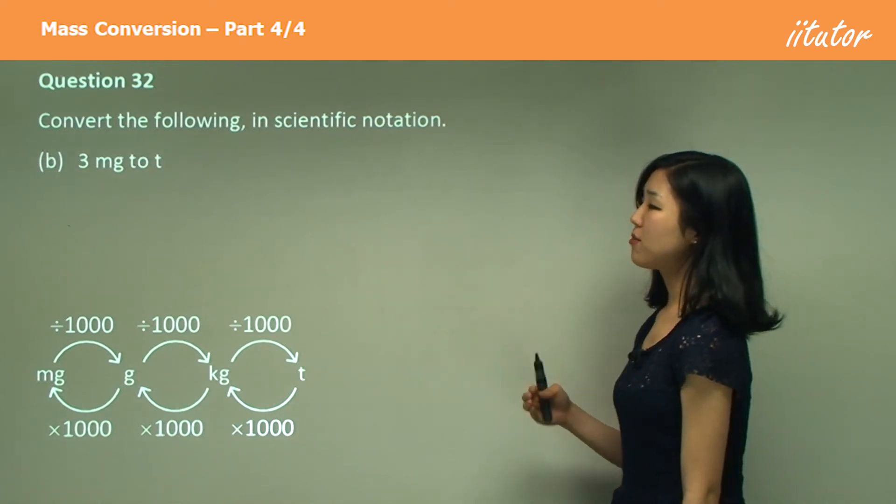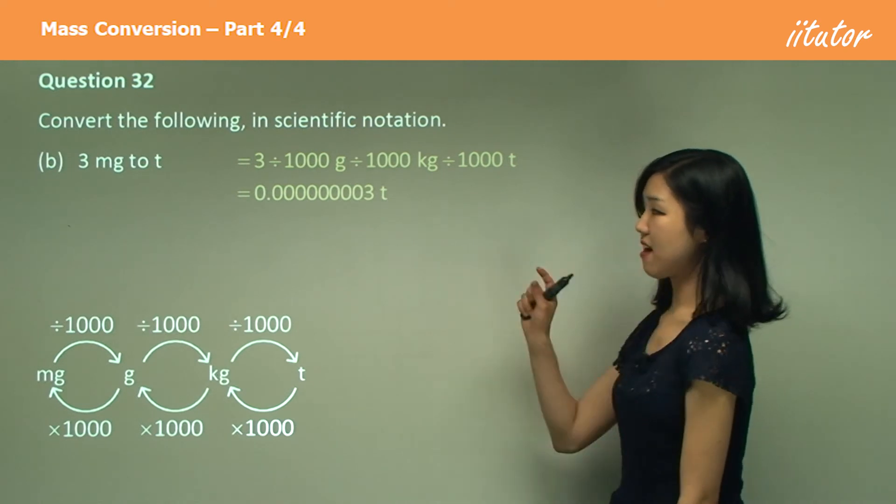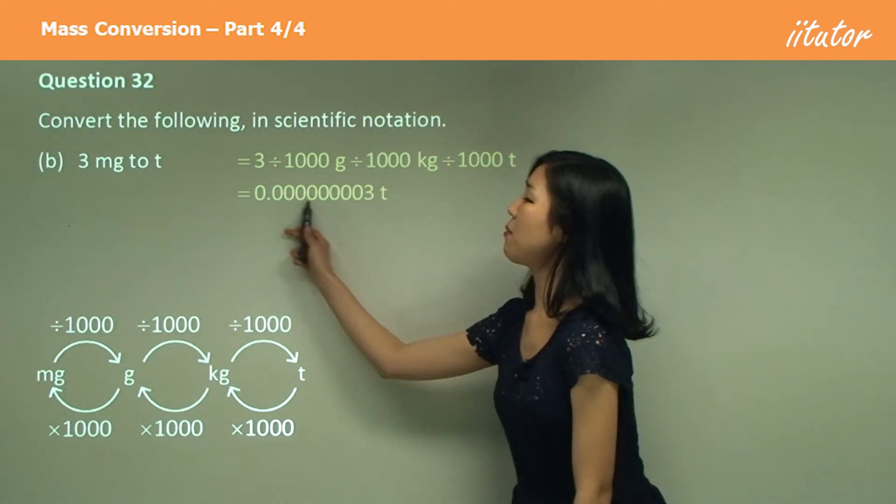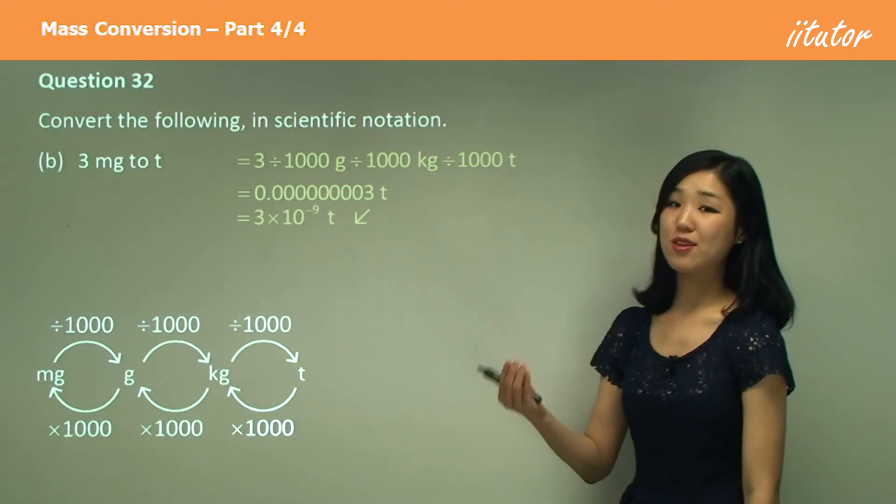Same thing, milligrams to tons, divide by thousand three times, meaning you have that really small decimal. So again, count how many decimal places we need to go backwards, should be nine times, so negative nine.